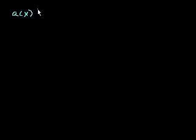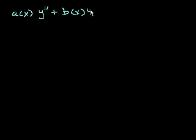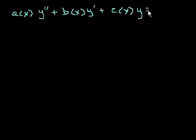I touched on it a little bit in our very first intro video, but a linear second order differential equation looks like this: a of x — some function only of x — times the second derivative of y with respect to x, plus b of x times the first derivative of y with respect to x, plus c of x times y, is equal to some function that's only a function of x.